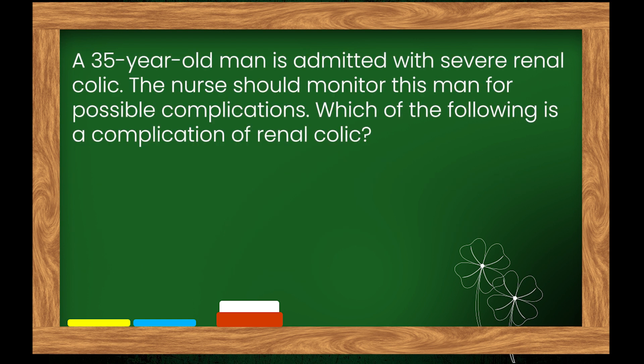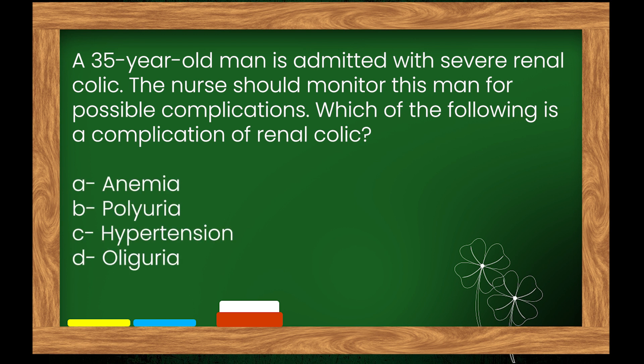Question 5: A 35-year-old man is admitted with severe renal colic. The nurse should monitor this man for possible complications. Which of the following is a complication of renal colic? Options: A. Anemia, B. Polyuria, C. Hypertension, D. Oliguria. The right answer is option D: Oliguria.